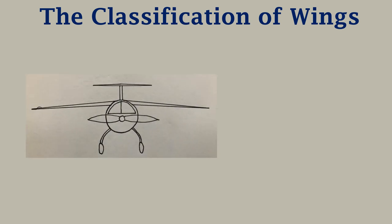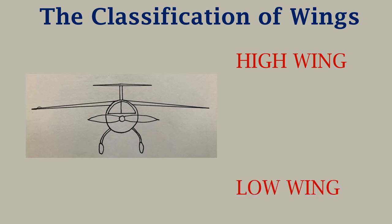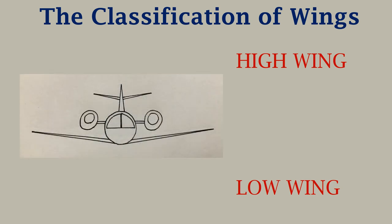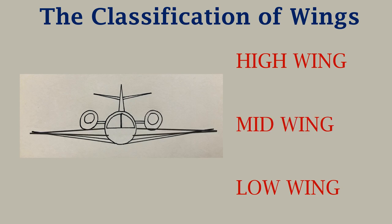First, we need to understand the classification of wings before looking at dihedral and anhedral wings. We have high wing configuration, where the wings are attached to the top section of the fuselage. Then we have low wing configuration, where the wings are attached to the bottom section of the fuselage. We may also find a mid wing configuration, where the wings are attached to the mid section of the fuselage.